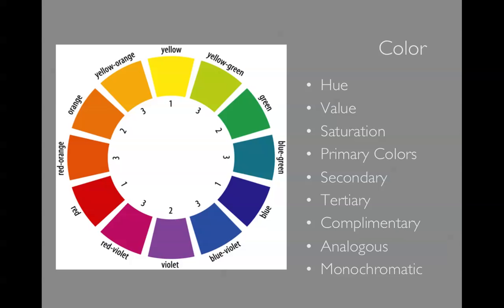Value, again, is the lightness or darkness. So you might have a light yellow versus a dark yellow, and that would be the value range within that hue.